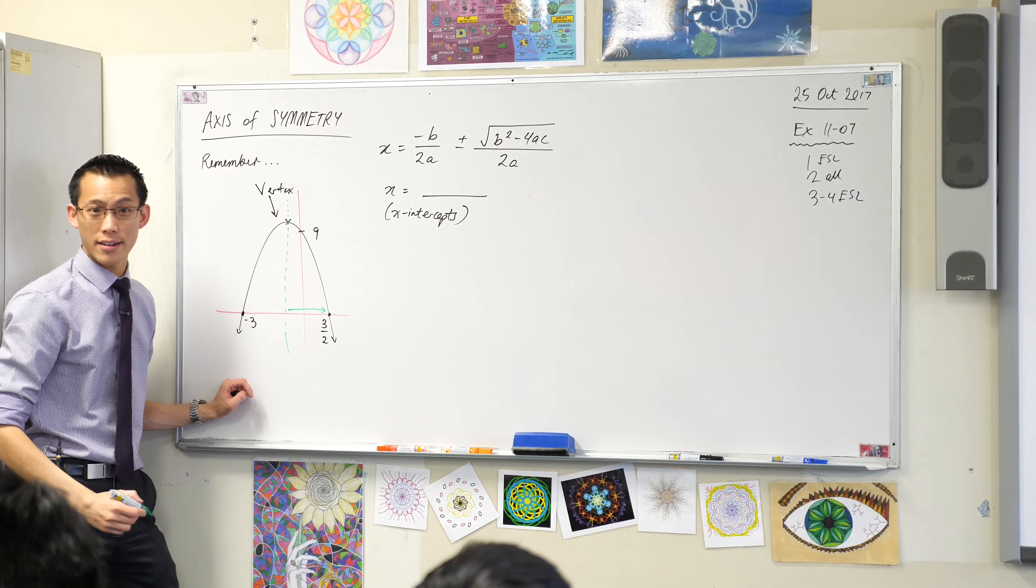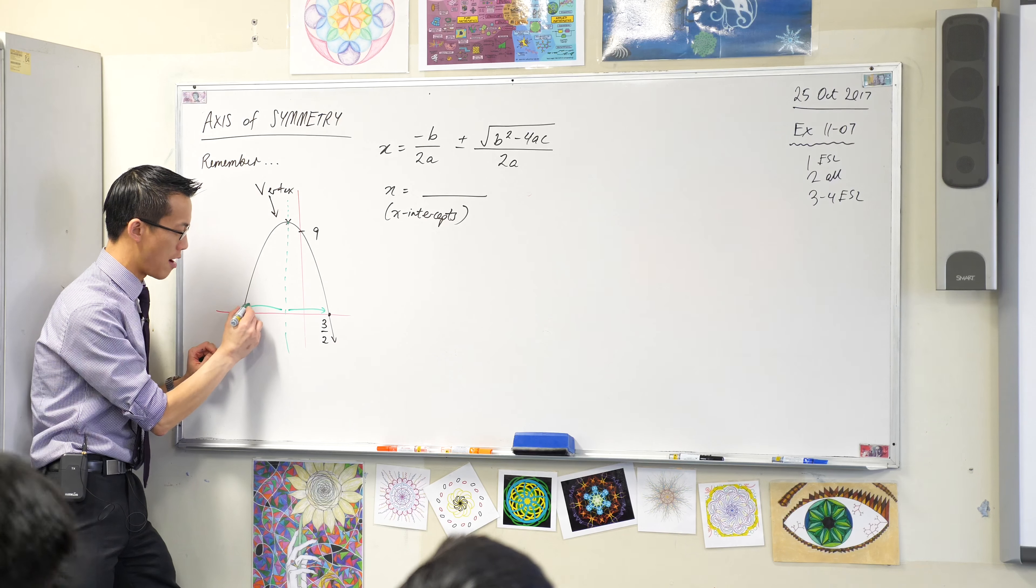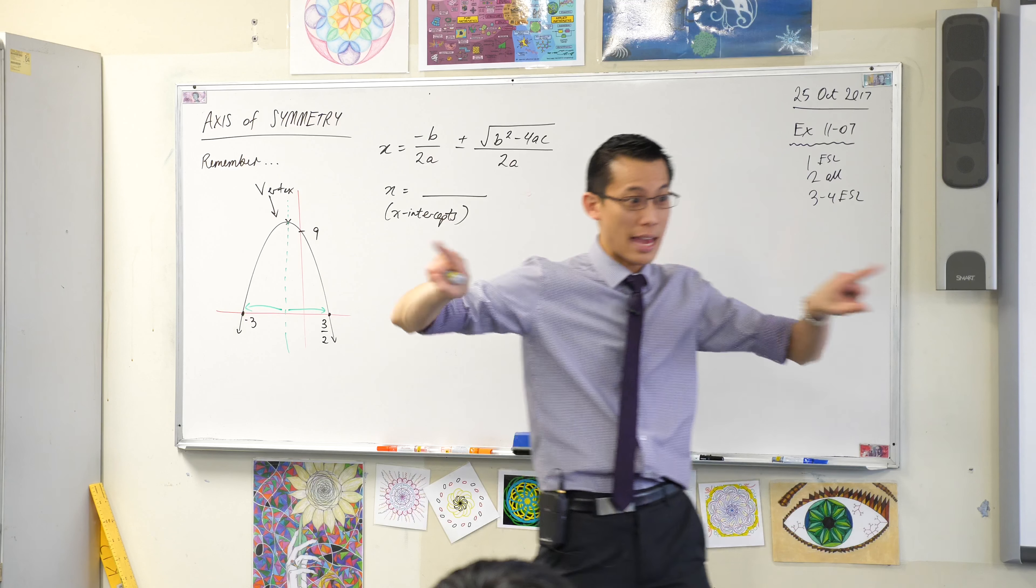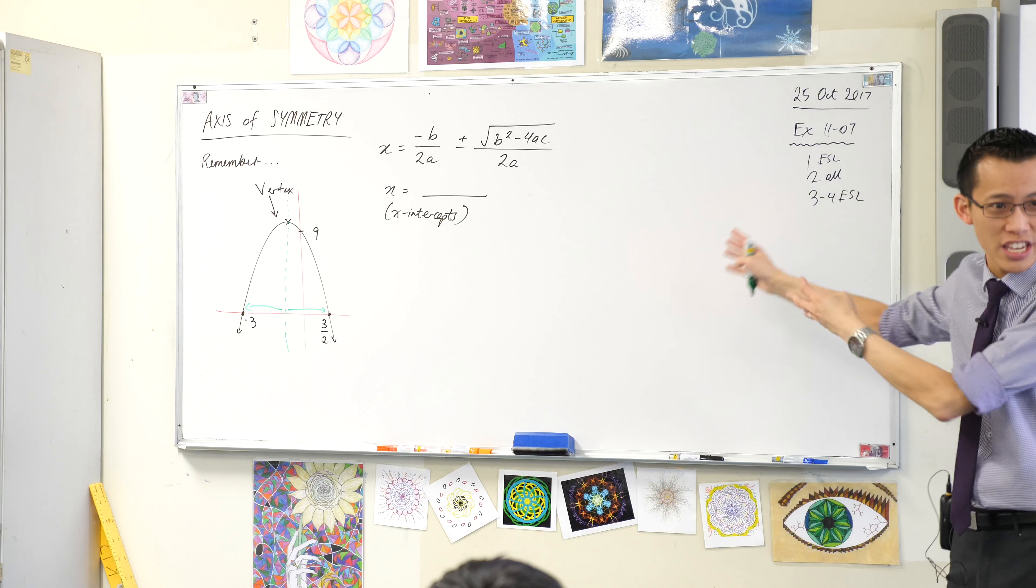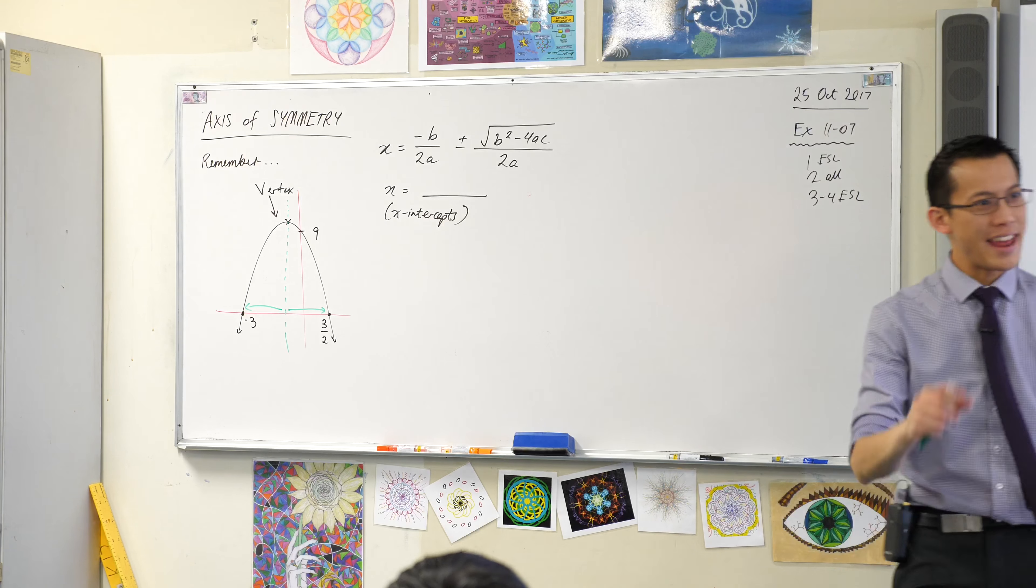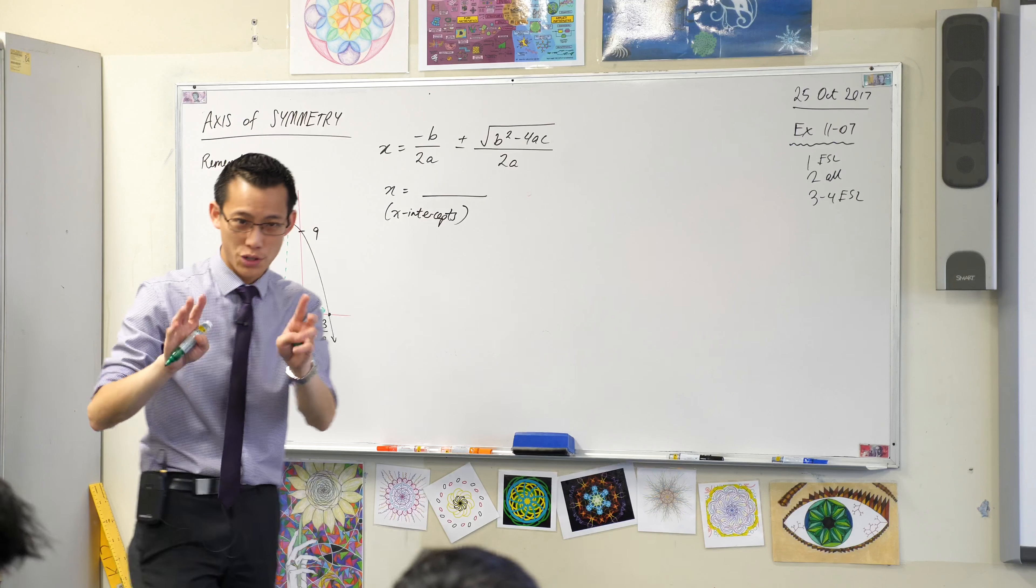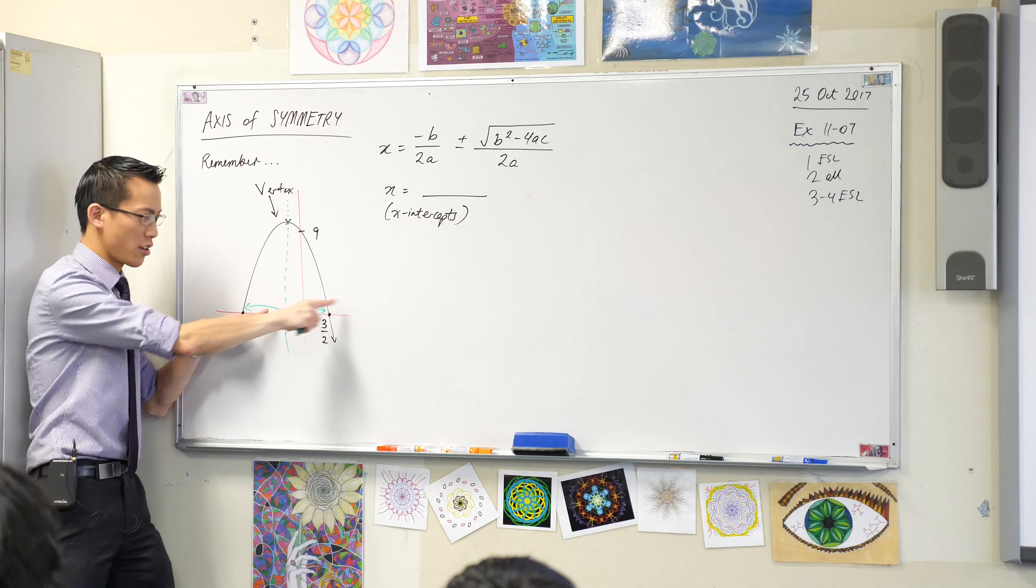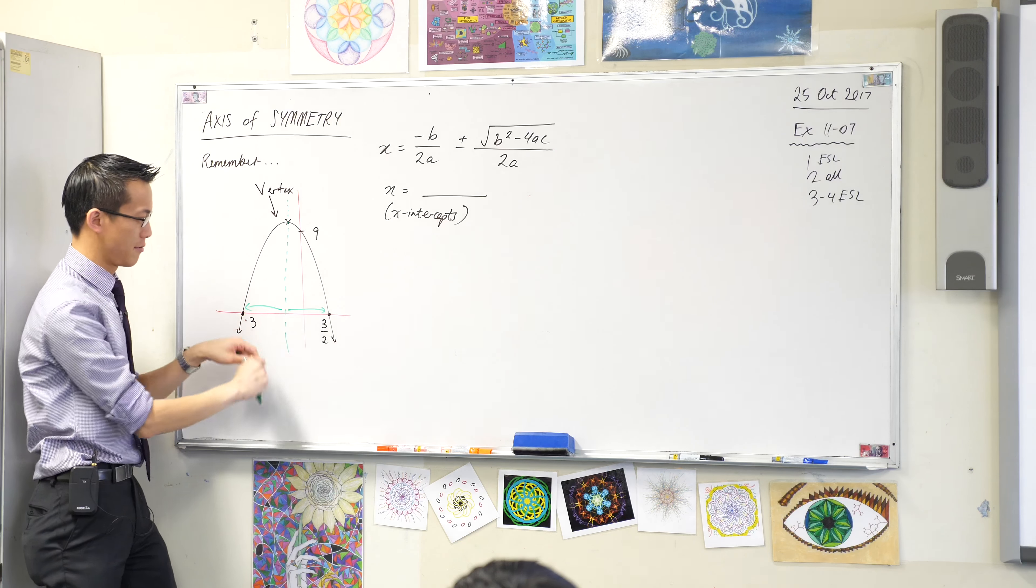And because it's symmetrical, they have to be the same distance apart. Does that make sense? Can you see it's sort of reflected across? See this, go to the right, go to the left. That way, that way.